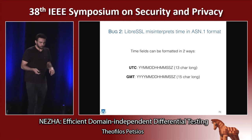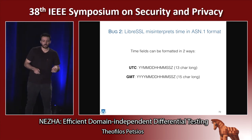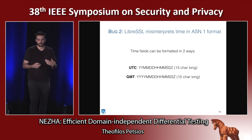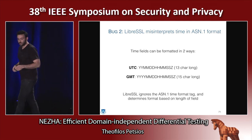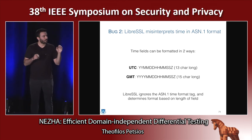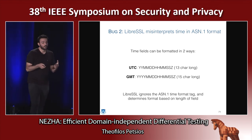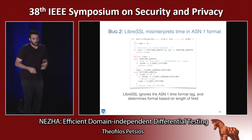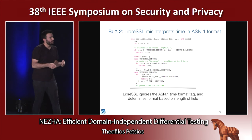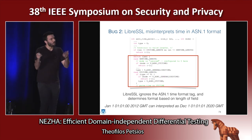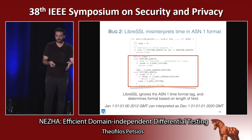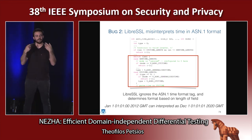Another bug found by Neza is a time confusion bug in LibreSSL. For those familiar with time formats in certificates, there are two main formats: UTC time and GMT time, each with a different length. What happens in LibreSSL is that it ignored the actual time format tag and only looked at the length to determine the date. If you provide the proper tag but a different length, you could trick LibreSSL into treating a certificate generated in the past as if it were generated in the future — causing it to reject the certificate as invalid because it sees a future date for the issue date.